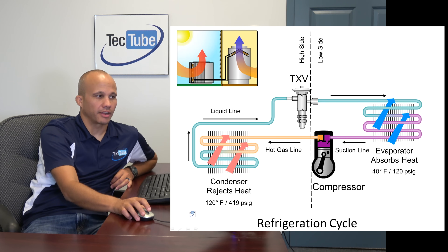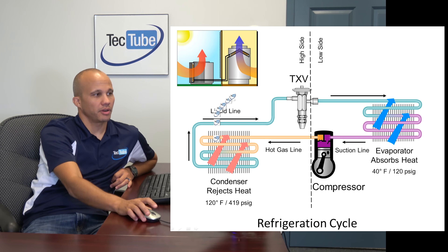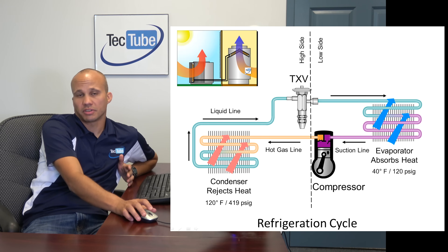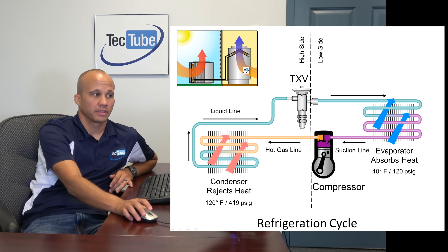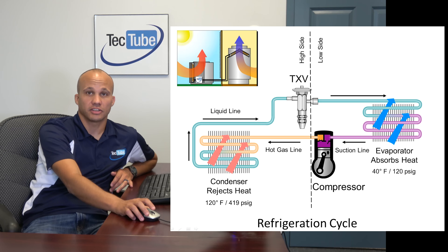We're taking a look at a refrigerant piping diagram here to show you the basic components, and we'll also look at it in the lab to show you what they physically look like in real life. Up here on the top left of my screen, I have a condensing unit outside and a fan coil with an evaporator coil on the inside — it could also be a furnace with an evaporator coil. The job of that coil is to absorb heat from the house, transfer that heat to the piping, and then dump that heat into your yard.